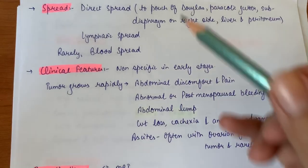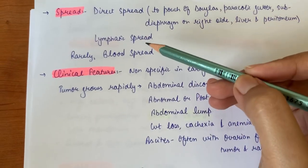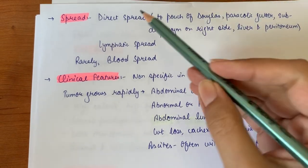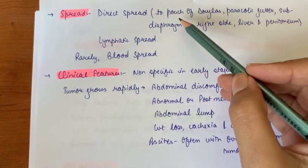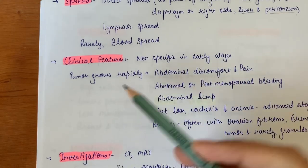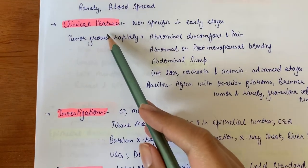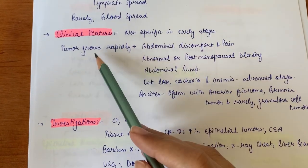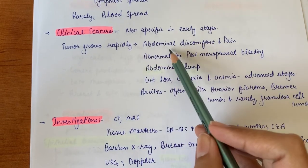Direct spread is to regional areas: pouch of Douglas, paracolic gutter, subdiaphragm on right side, liver and peritoneum. Clinical features of this tumor are non-specific in early stages, but it grows rapidly and causes abdominal discomfort and pain.